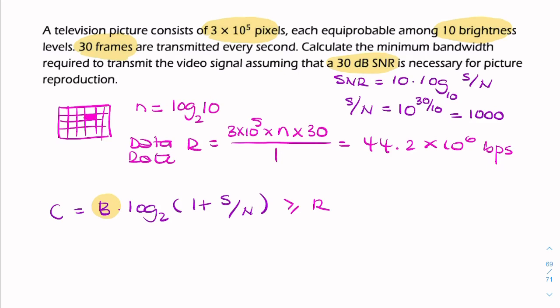So we can replace R here with 44.2 times 10 to the power 6. So that's that. So we just rearrange that to find B. So if you just divide 44.2 times 10 to the power 6 divided by log of the signal-to-noise ratio. The signal-to-noise ratio we just found is 1,000. So I can replace that with 1,000. And it'll give you something very close to 3 megahertz.